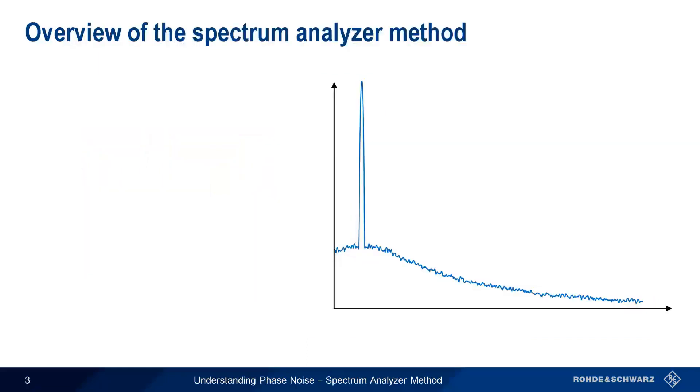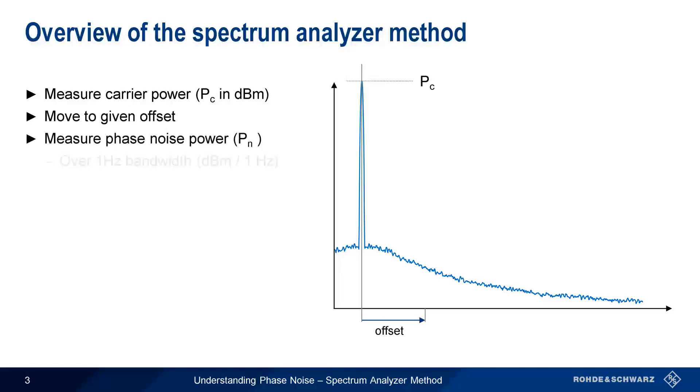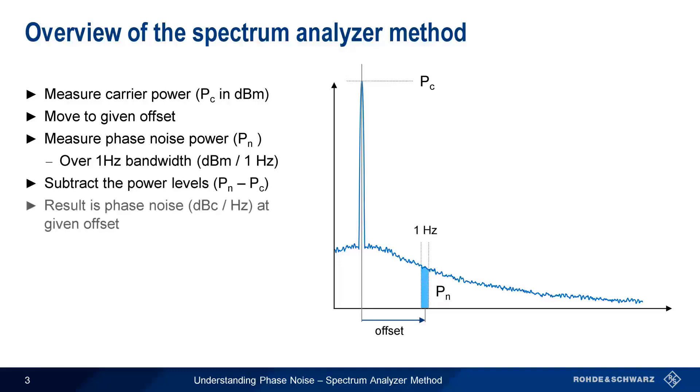The Spectrum Analyzer Method is the oldest, most straightforward, and most widely used way to measure phase noise. The basic steps in this method are as follows: We start by measuring the carrier power of the device under test. We then move to a given frequency offset from the carrier, that is, to a point in the sideband, and measure the phase noise power contained in a 1 Hz bandwidth. If we subtract the carrier power from the noise power, the result is phase noise in dBc per hertz at the given offset.